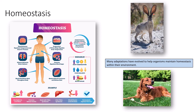Many adaptations have evolved to help organisms maintain homeostasis. For instance, a jackrabbit has very large ears — a feature common in many desert-dwelling organisms — because there are many blood vessels associated with the ear. This gives desert animals a large surface area to cool their blood, since those blood vessels are so close to the skin's surface that excess heat can dissipate through the ears. Dogs have the ability to pant, releasing extra internal heat through their mouth.